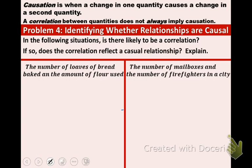This is the last example. We technically skipped example 3 in the textbook, so we're moving on to example 4. And now let's read this together. In the following situations, is there likely to be a correlation? If so, does the correlation reflect a causal relationship? Explain.